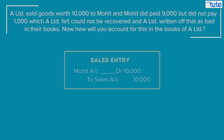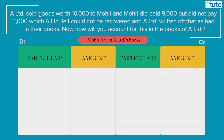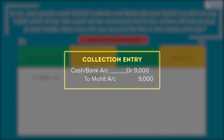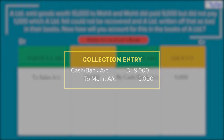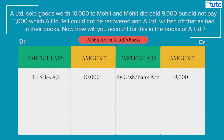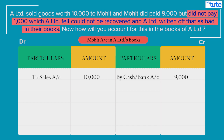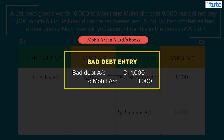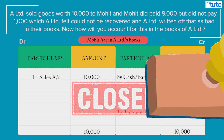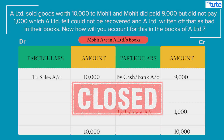Let's prepare the ledger account of Mohit in A Limited's books and post these transactions simultaneously. After this, the collection entry would be cash/bank account debit to Mohit account 9,000. And lastly, the bad debts entry for the amount which could not be recovered, that is 1,000. The entry for this would be bad debts account debit to Mohit account 1,000. As we can see, Mohit's account is now closed in the books of A Limited.